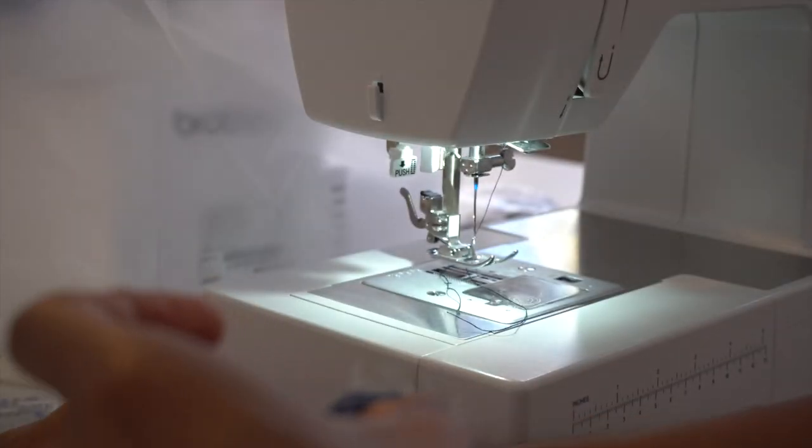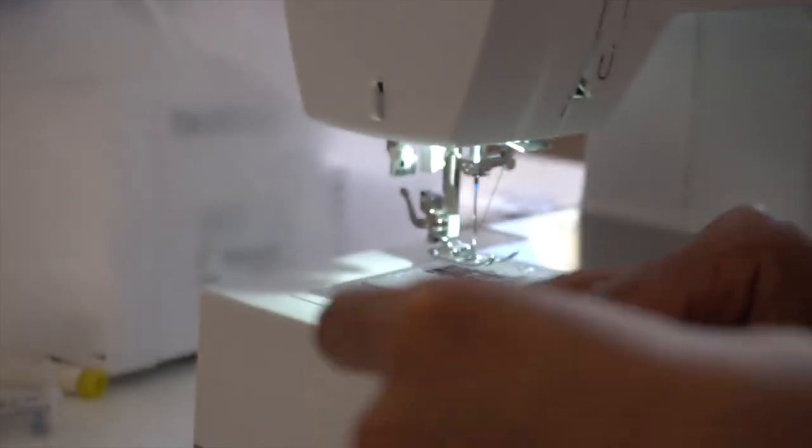So the next step is to flip the scrunchie over to the right side. If you're doing a thinner scrunchie you can use a safety pin to assist. I don't think I'm going to need one just because this is a bit bigger, so I'm just going to flip it over using my fingers. So what we're going to do is match each of the open ends with the other. And we're going to pin it and then stitch it. Now I'm going to take it to the machine and stitch it across.